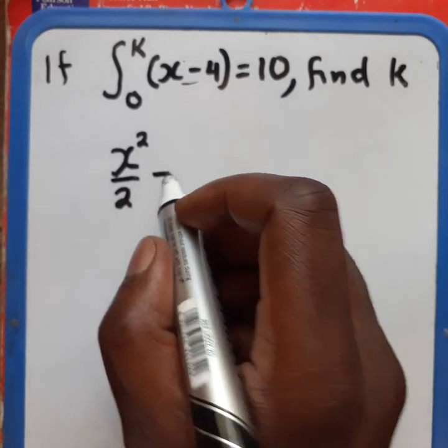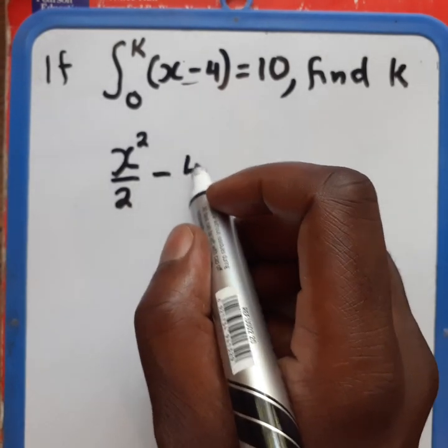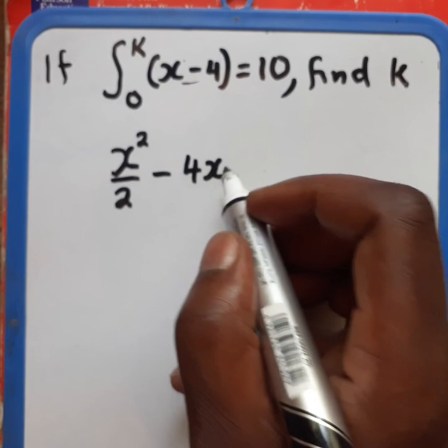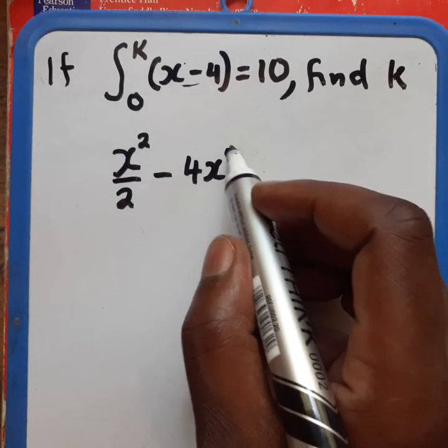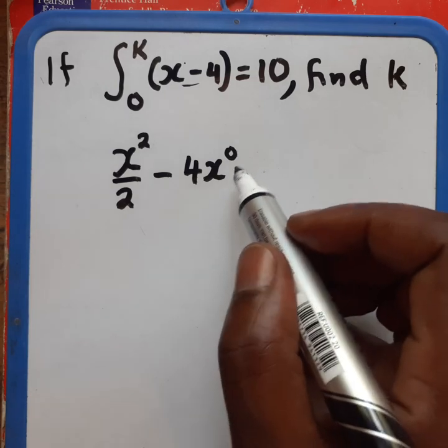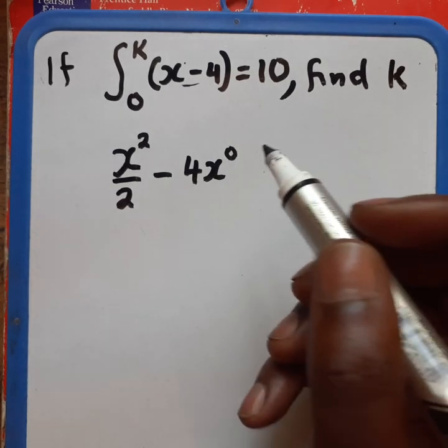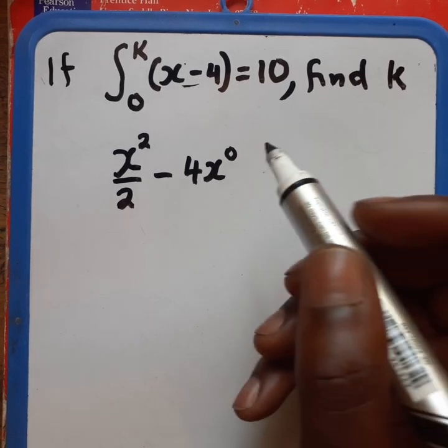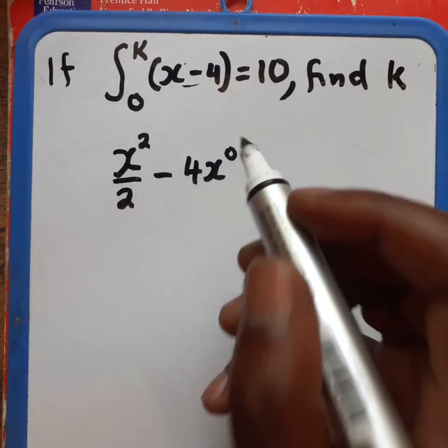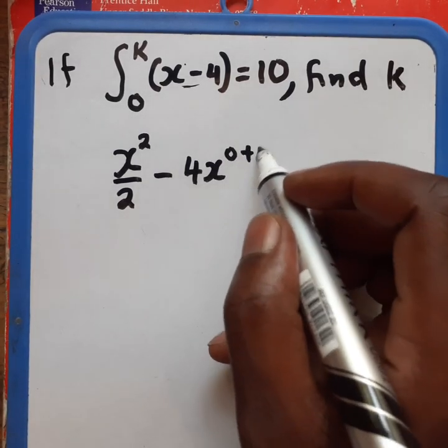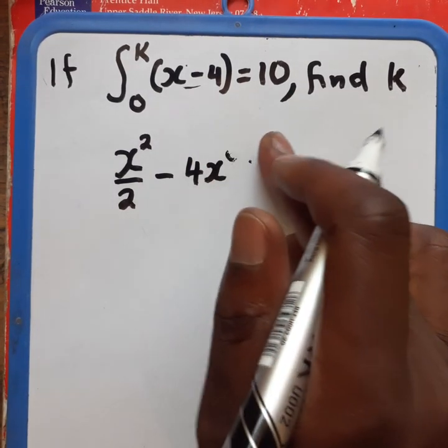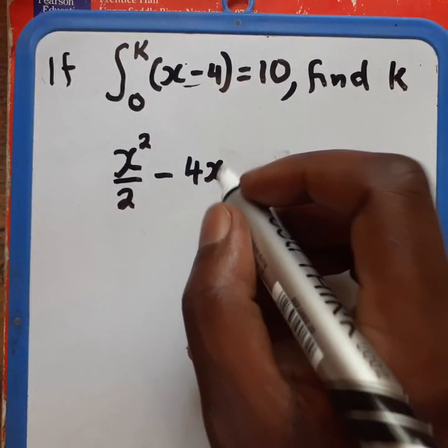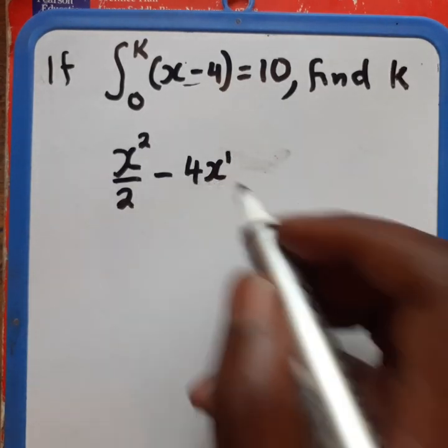So this 4 here has got an x, which is like raised to the power 0. But you know that any base raised to 0 apart from 0 itself, it is 1. So that is why it was invisible. But in this case, we need to add another one. When we add a 1 here, it will become visible. So we're going to have 4x.